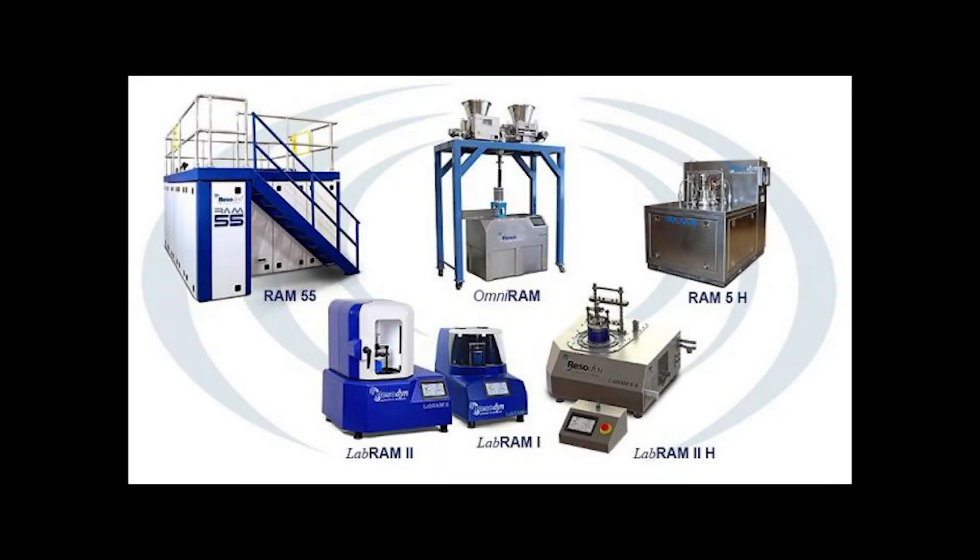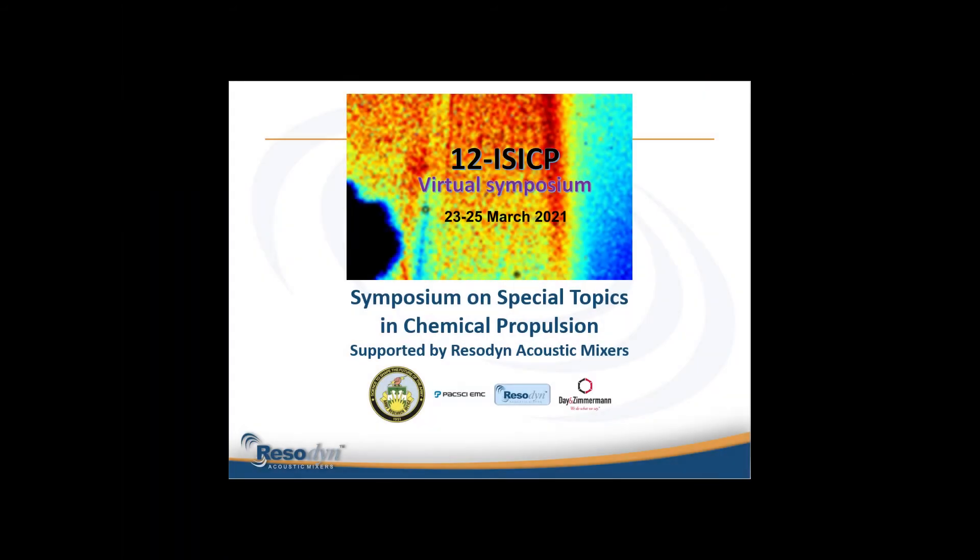Ram Mixers range in payload capacity from 1 kg to 420 kg in batch mode. Ram production models are also compatible with Resodyne Continuous Mixing Systems. We're proud to be sponsors of ISICP's 12th Symposium, and we look forward to your participation.